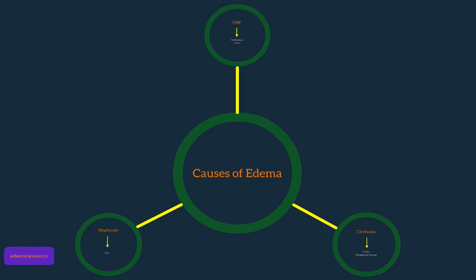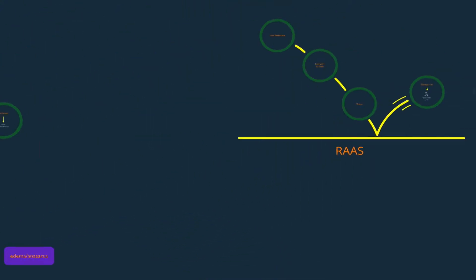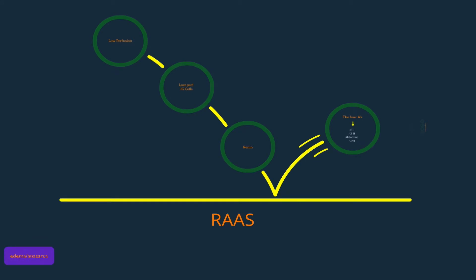The causes of edema are three only: CHF, cirrhosis, and nephrosis. Physiologically, this leads to IVVD — intravascular volume depletion. The body perceives low volume, and this triggers a cascade of events physiologically, leading to low perfusion particularly of the juxtaglomerular cells in the kidney.